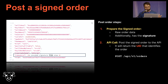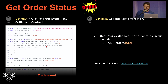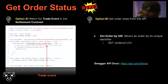Once you have a raw order signed, you prepare the signed order to send — trivially by adding the signature to the raw order from the previous step. With this signed order, you post it to the API, which returns a unique identifier. This identifier is very useful for checking the state of your order. One way is to watch for trade events in the settlement contract — every time a solver delivers a solution in a batch, there's a settlement with a bunch of trades.